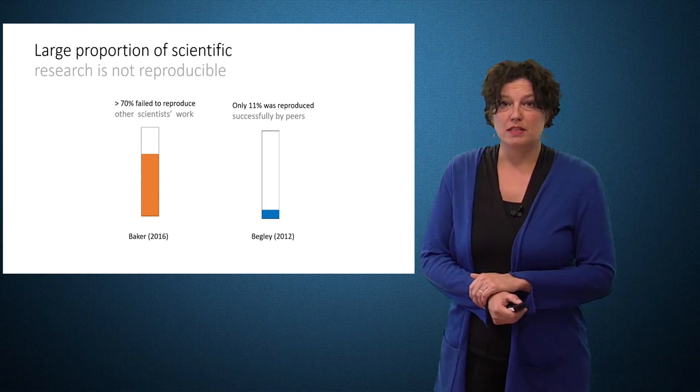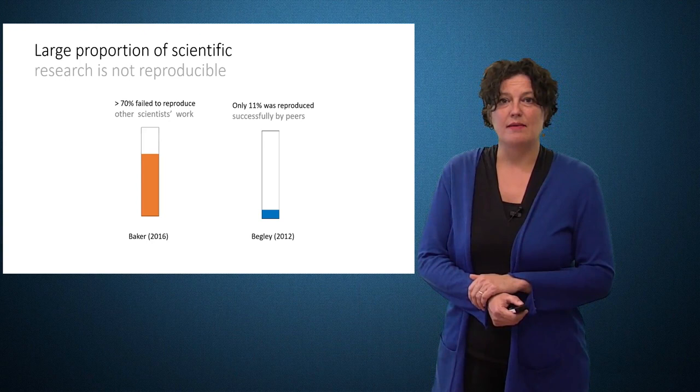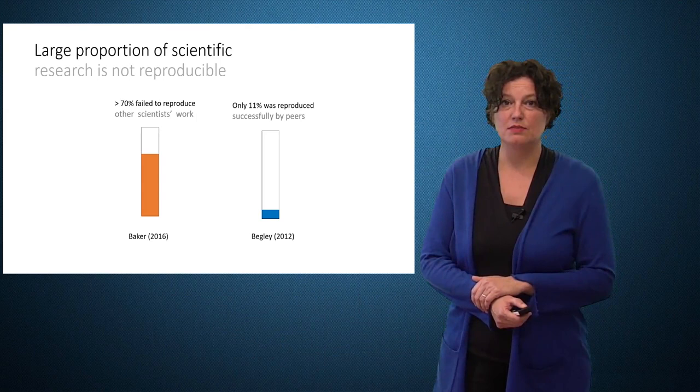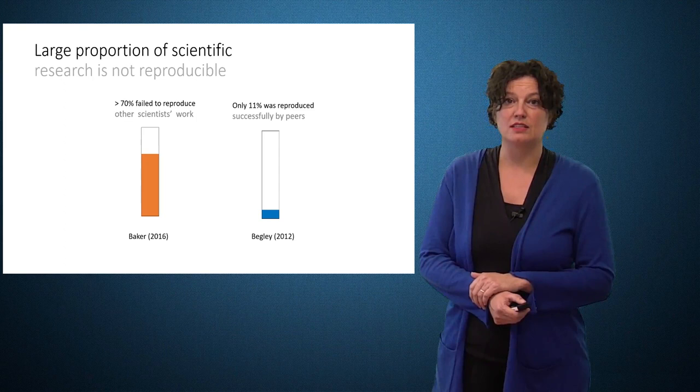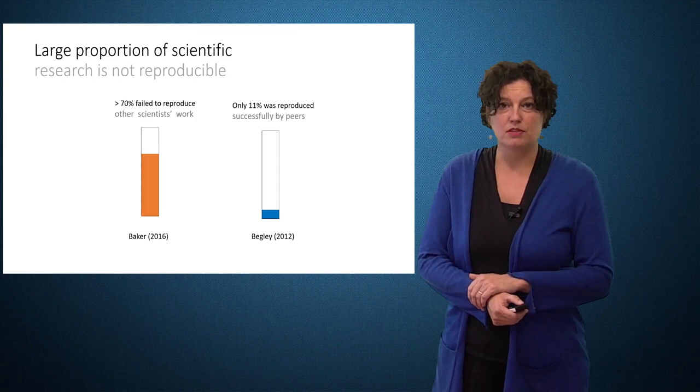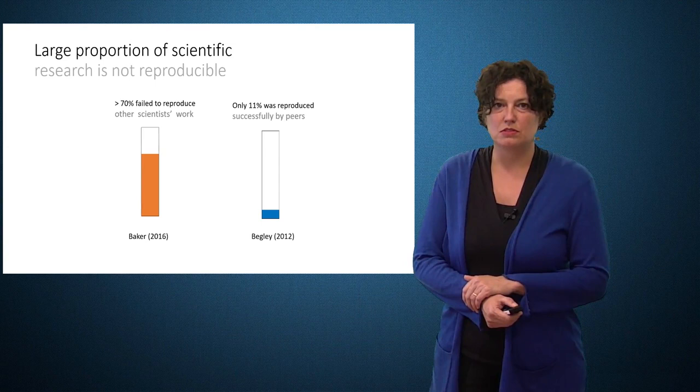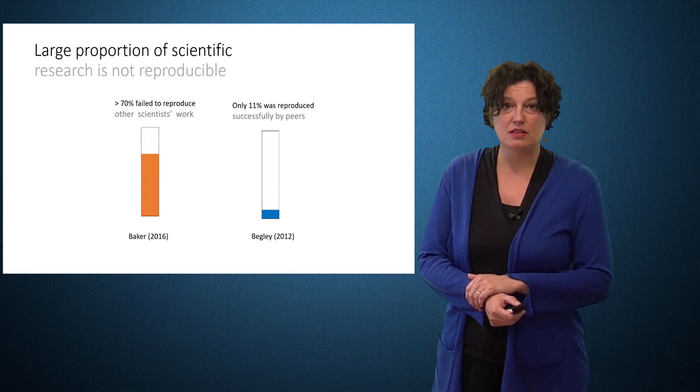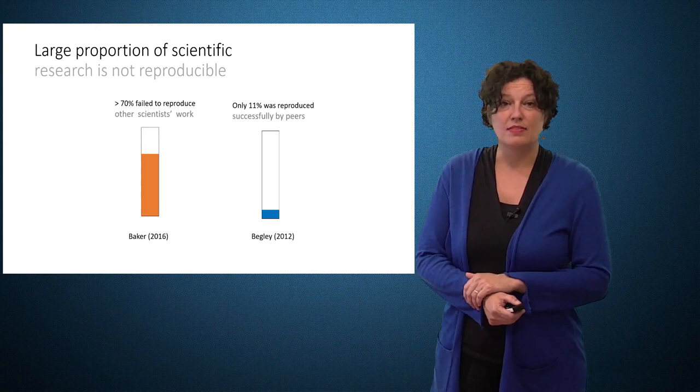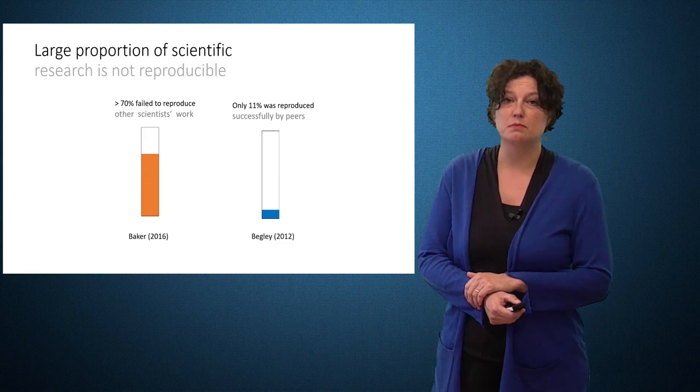Reproducibility relies on the ability of scientists to produce each other's published results so that they can build upon prior knowledge. Recently, reproducibility of science has come under scrutiny as it has been discovered that a large portion of scientific research is not reproducible. Begley, for instance, reported in a study within the field of medicine that only 11 percent of the research results could be reproduced. Baker reported that in more than 70 percent of the studies it was not possible to reproduce each other's published results, and this involved researchers from biology, chemistry, earth and environmental sciences, medicine, physics and engineering.